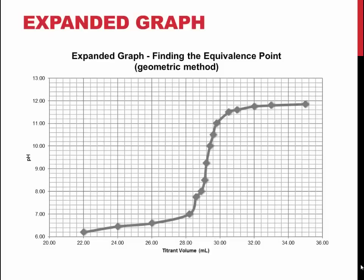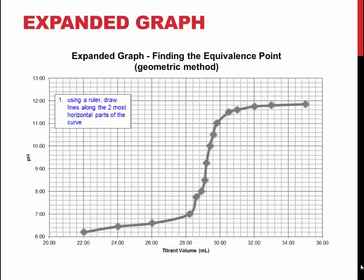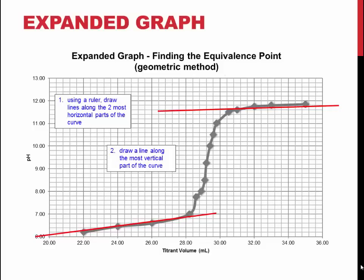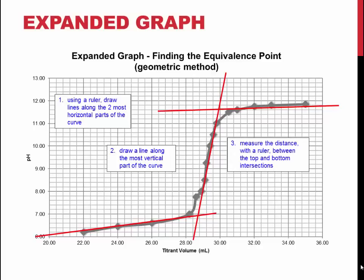You will need to manually determine the equivalence point of the reaction from your titration curve. To do this, draw two straight lines, one above and one below the large shift in pH surrounding the equivalence point. Draw a third line along the vertical part of the curve so that it intersects with both the previous two lines. Measure the distance between the two intersections. The exact center of the third line between the two intersections is the equivalence point.